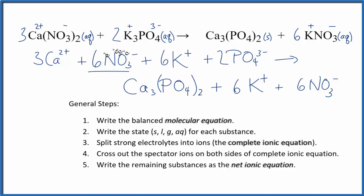We have six of these nitrates here and six here. We can just cross that out. Six potassium ions, six here. Cross it out.